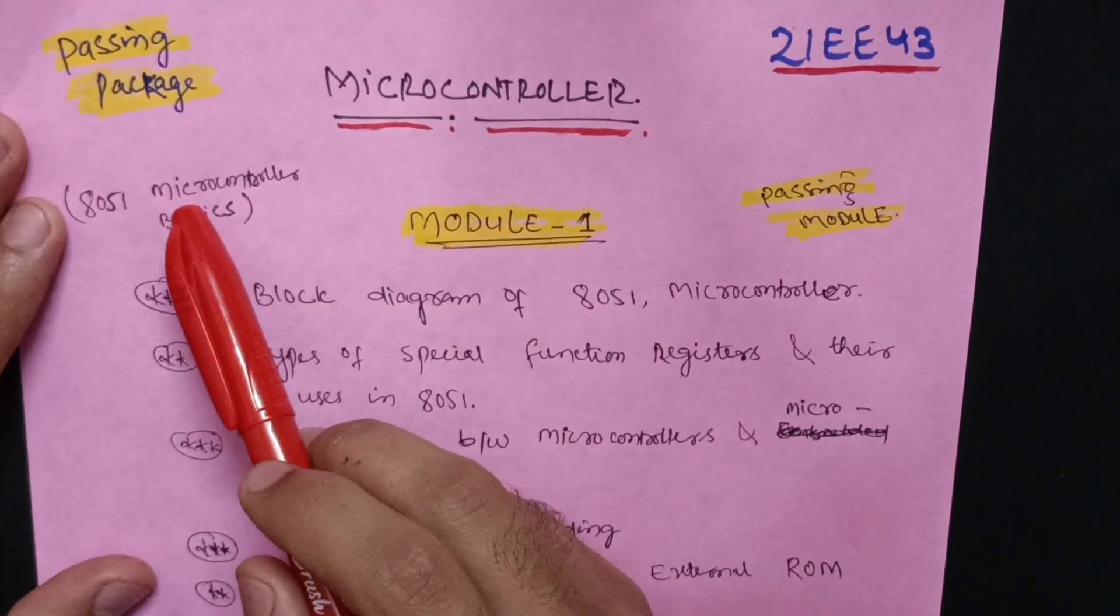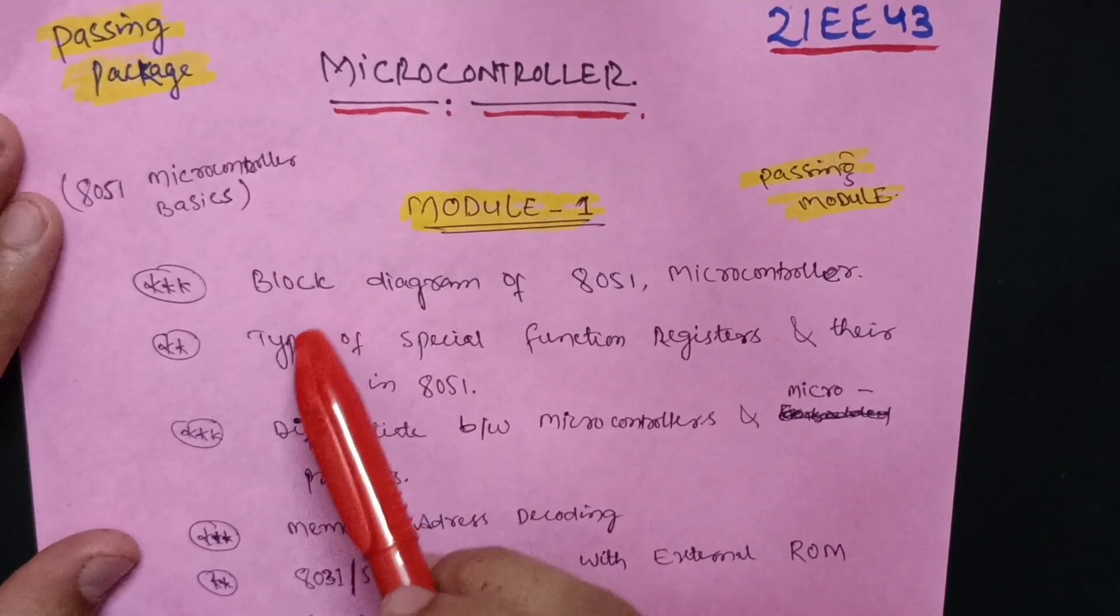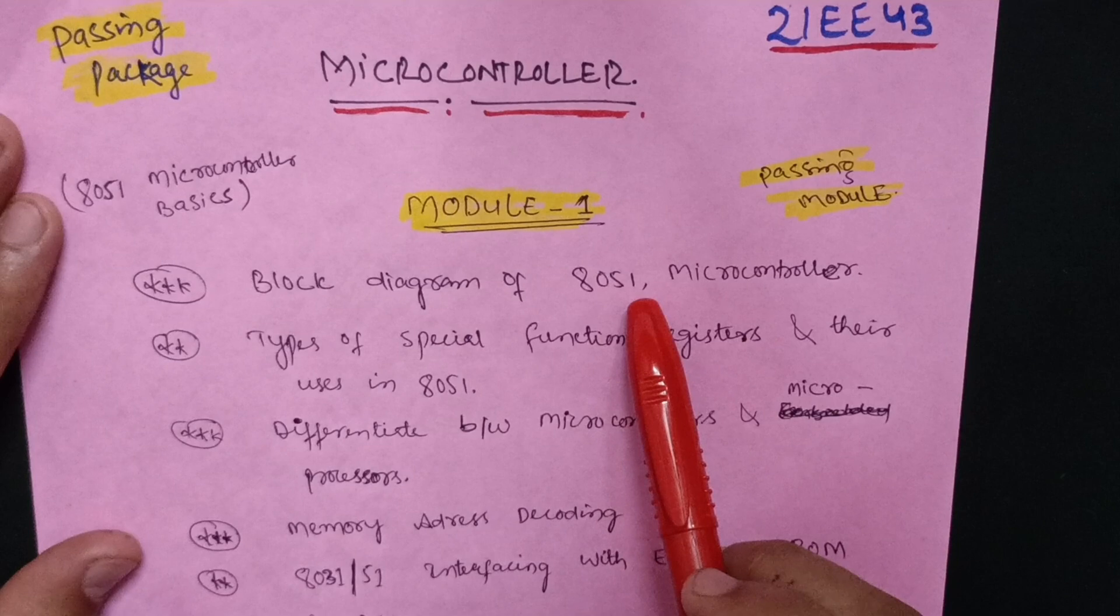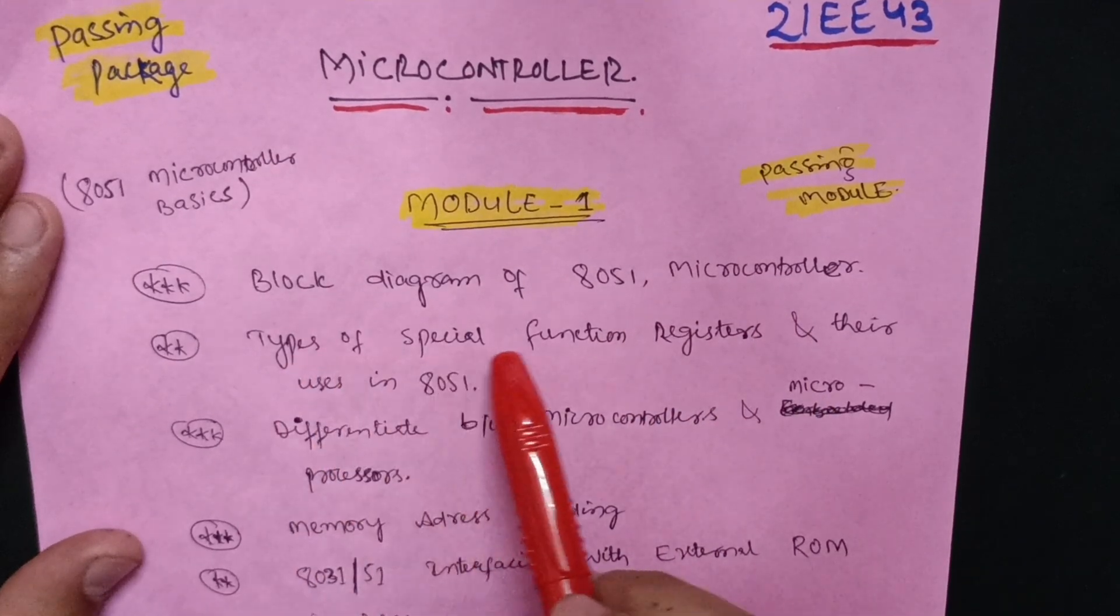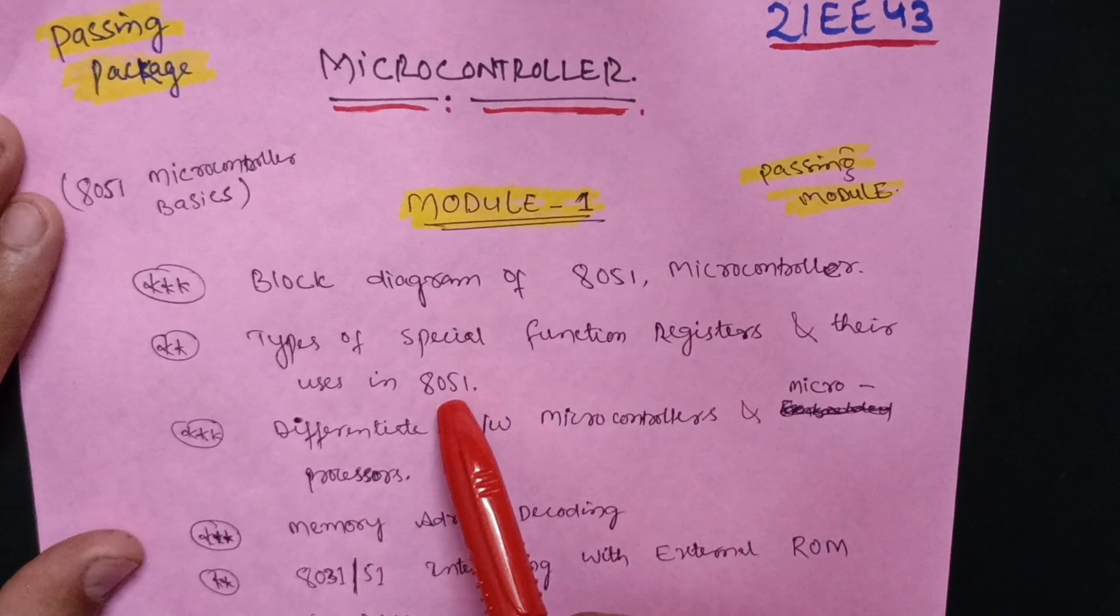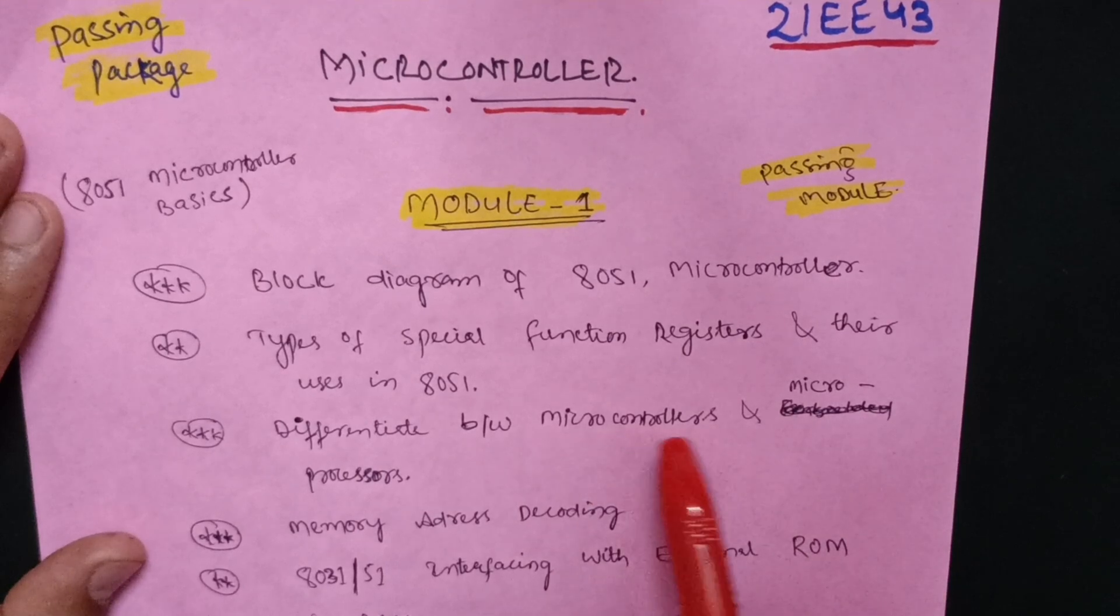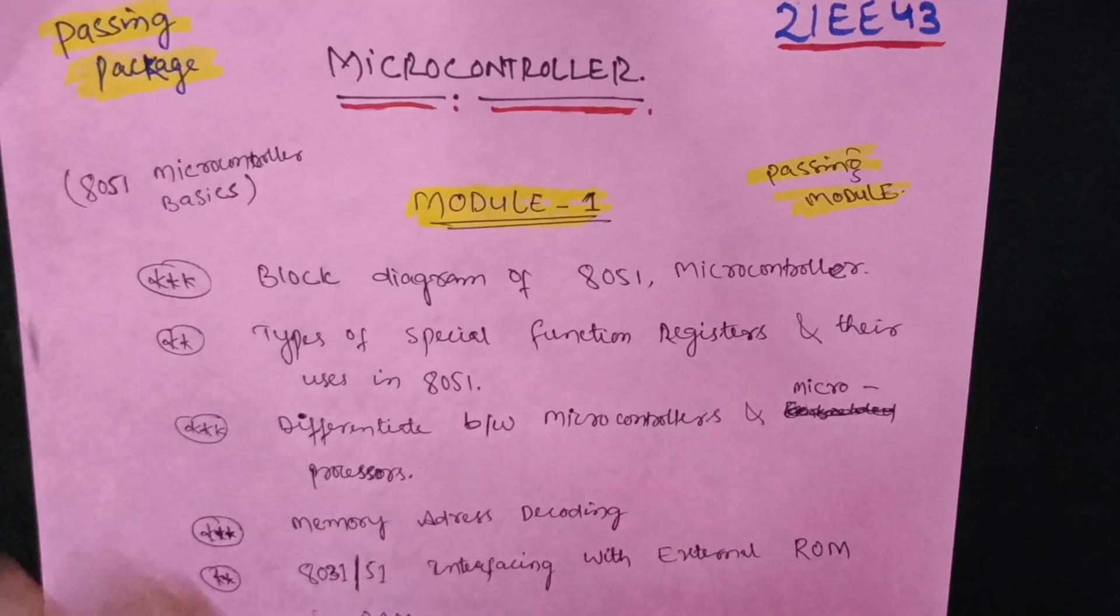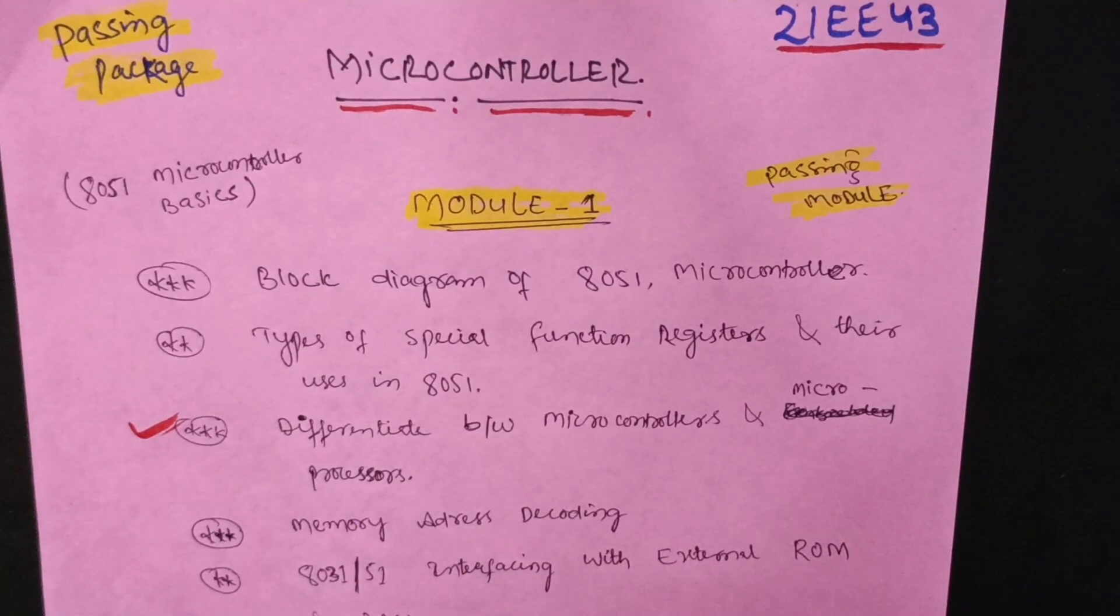That is 8051 microcontroller basics. First question is a definite question: block diagram of 8051 microcontroller, then types of special function registers and their uses in 8051 microcontroller, then differentiate between microcontrollers and microprocessors. This is the most important question. It was a frequently asked question in every examination.